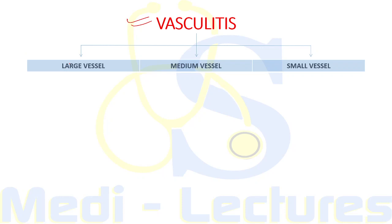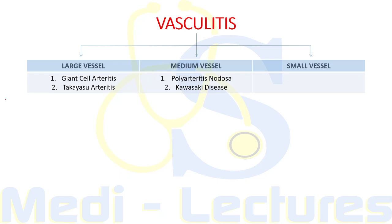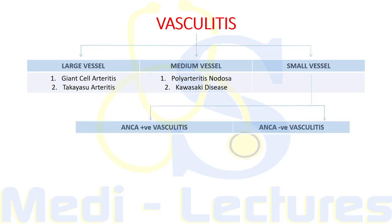Let's see how vasculitis is classified. First, there is large vessel vasculitis, then medium vessel vasculitis, and small vessel vasculitis. Large vessel vasculitis has two conditions remembered by 'GT': Giant Cell Arteritis and Takayasu Arteritis. Medium vessel vasculitis can be remembered by 'PK': Polyarteritis Nodosa and Kawasaki Disease.